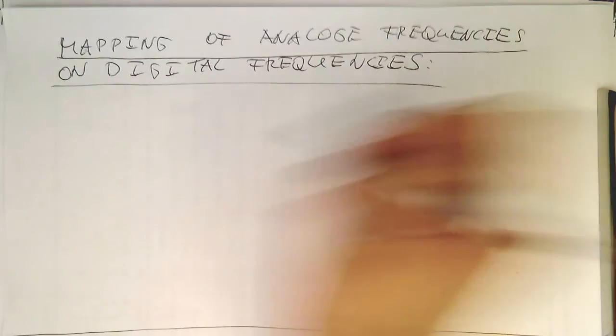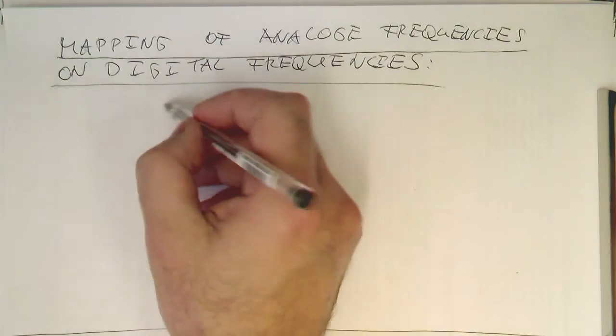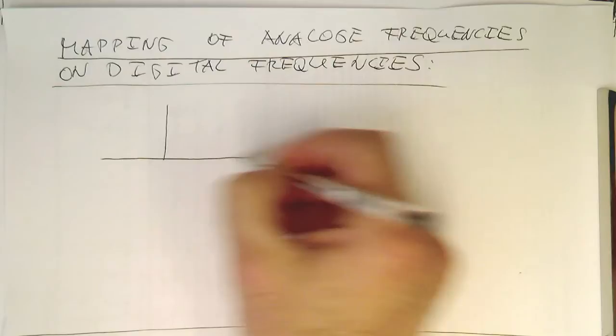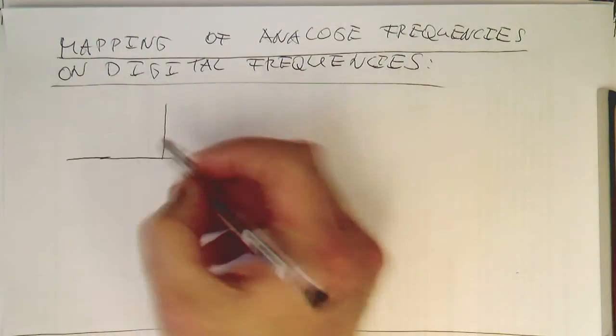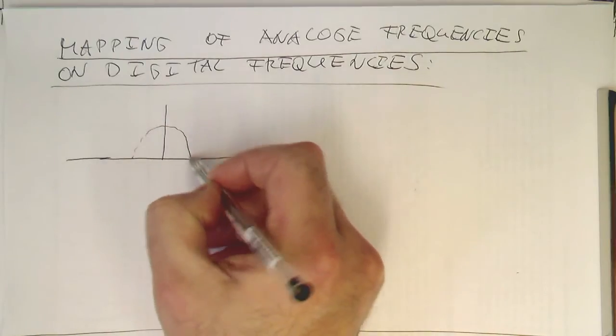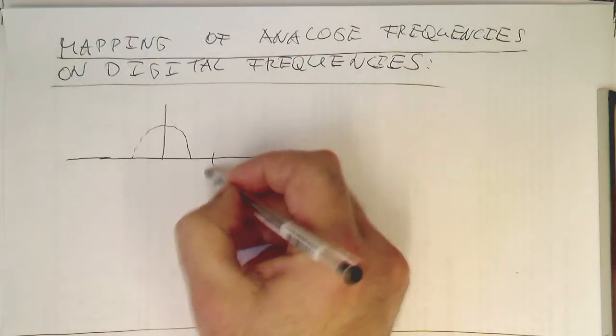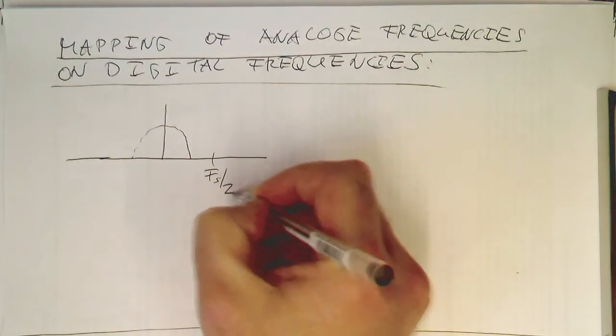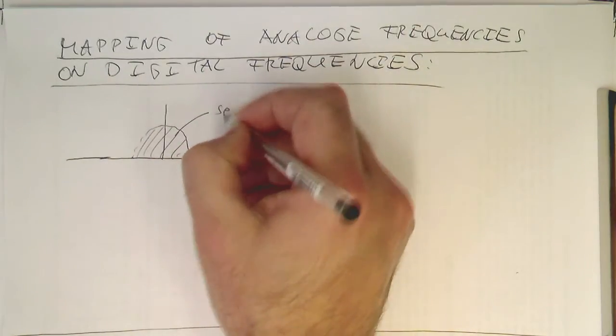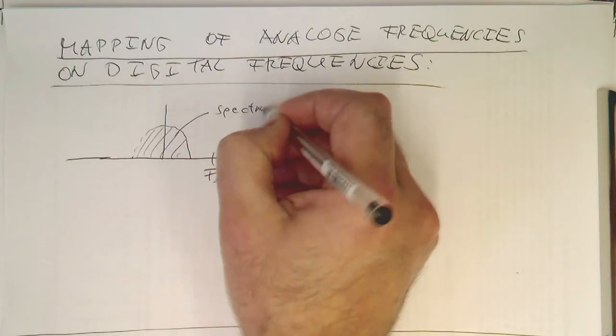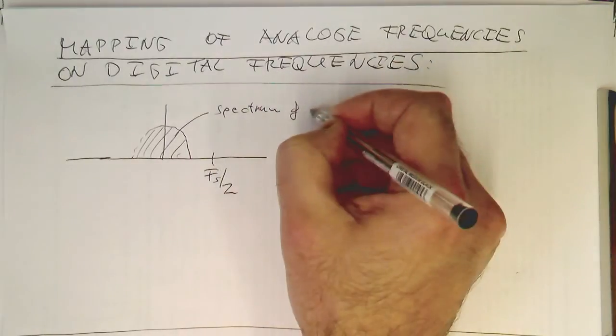Let's just draw this diagram again, what I've drawn already before. So we've got here our frequency distribution of our signal. We've got here our Fs/2 and this is the spectrum of our signal.